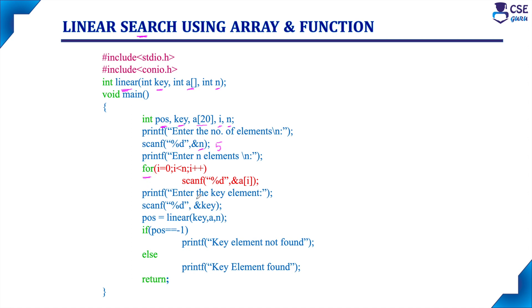Then using the for loop, enter the five elements using the scanf statement. If you are entering, a[0] to a[4] — totally n value was 5, so 5 elements it will accept from the user. The starting array location is a[0] and the last location is a[n-1]. If n value is 5, then 5 minus 1 is 4. Always remember: array will start from the 0th location and the last location is n minus 1.